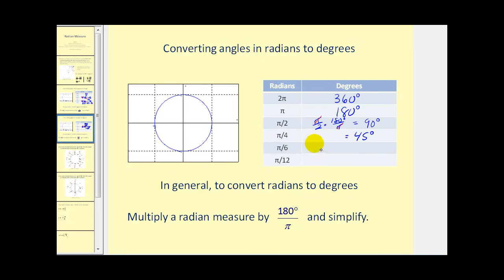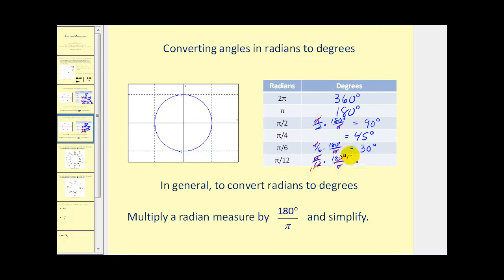For pi over six: multiply by 180 degrees over pi. The pi's cancel, and since there are 30 sixes in 180, the result is 30 degrees. For pi over 12: the pi's cancel, and since 180 equals 12 times 15, the six simplifies to one and we get 15 degrees.